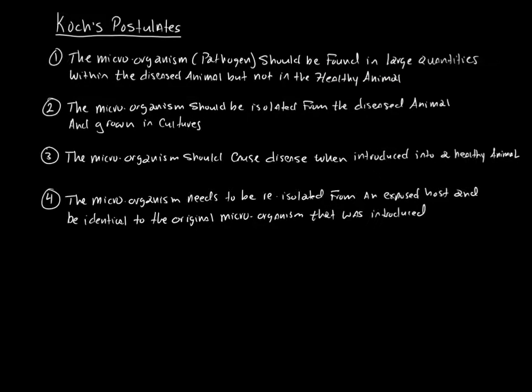You may find some in the healthy animal. For example, we all have E. coli in our gut, in our intestines, but we shouldn't have a whole lot of E. coli in our urinary tract. And then, what should happen is those organisms should be isolated from the diseased animal and then grown in cultures, grown in pure cultures. So you take a culture of that organism, you isolate that organism, and then you grow it. And then, once you have grown that microorganism in pure cultures, that microorganism should cause disease when introduced into a healthy animal. So you grow it, you take it, you introduce it to a healthy animal.